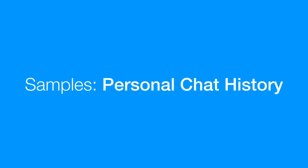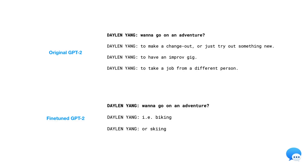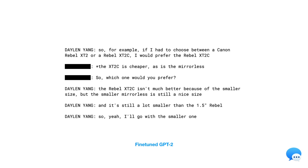Now let's look at some samples from the personal chat history model. Here we see the original GPT-2 model prompted with the author saying 'want to go on an adventure?', and the model fills it in with various adventure-related things. But on the bottom, we see the fine-tuned model, which produces adventure ideas that are specific to the author. The author really likes to talk about camera gear, so the model learns to talk about cameras.